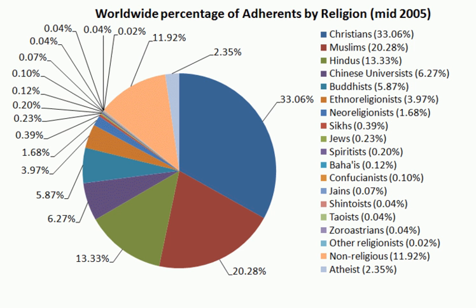The division into ancient-medieval-modern overlooks the fact that Muslim conquests took place between the 8th and 14th century, while the South was never completely conquered. According to Thapar, a periodization could also be based on significant social and economic changes not strictly related to a change of ruling powers. Smart and Michaels seem to follow Mill's periodization, while Flood and Muse follow the ancient, classical, mediaeval and modern periods periodization.